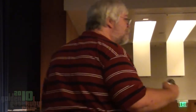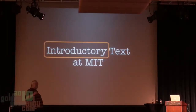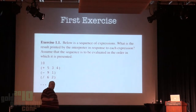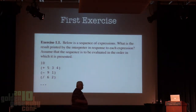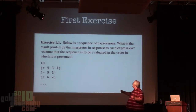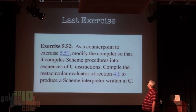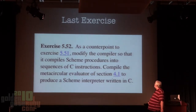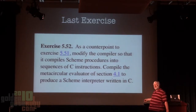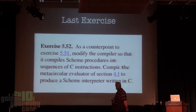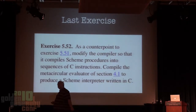The recommendation was that all developers should take a look at this book and see what it has for them. I was thinking—an introductory book? I've been programming for at least as long as Josh. What could this possibly have of use for me? Well, we know it's an introductory book because the very first exercise is: please evaluate these expressions—five plus three plus four, nine minus one, six divided by two. Very introductory. We also know it's an MIT book because the last exercise is to produce a Scheme interpreter written in C. This is the introductory text to MIT computer science.